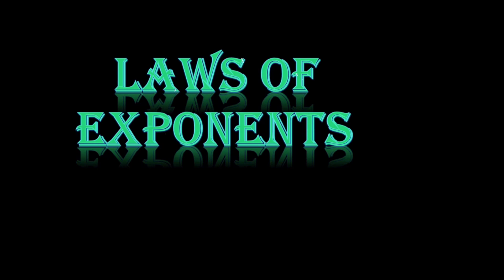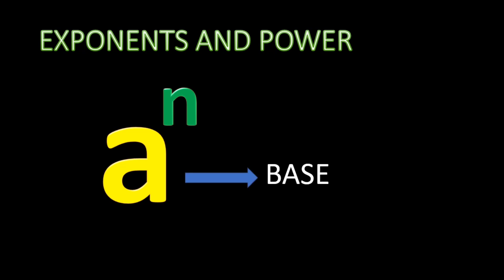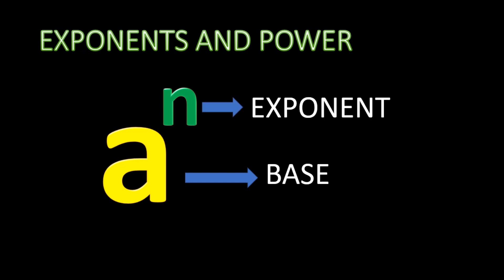Before getting into the concept, let's recall what exponents and powers are. When a number is repeatedly multiplied by itself — let us take a number 'a' which is multiplied repeatedly n number of times — the number which is repeatedly multiplied is called the base, how many times it is multiplied is called the exponent, and the total expression is referred to as a power.